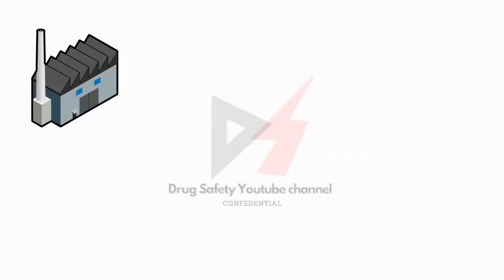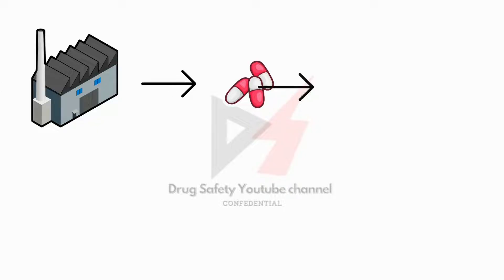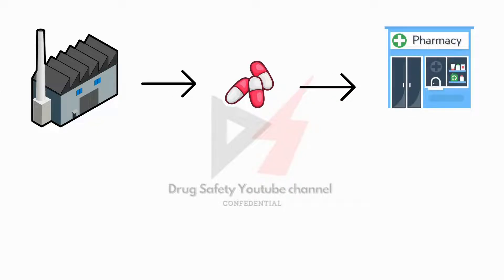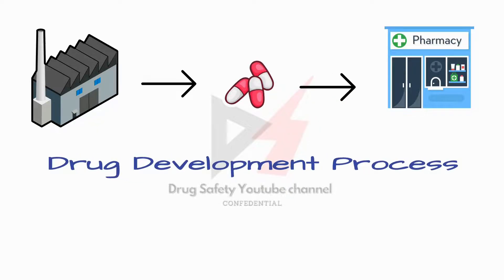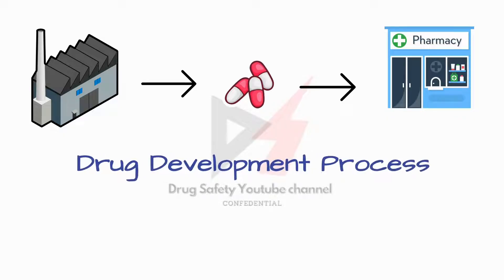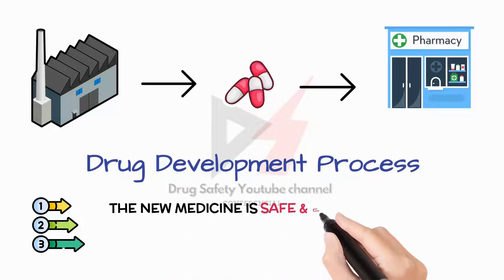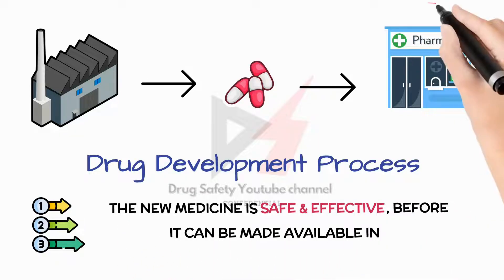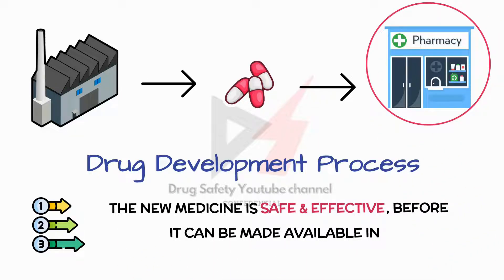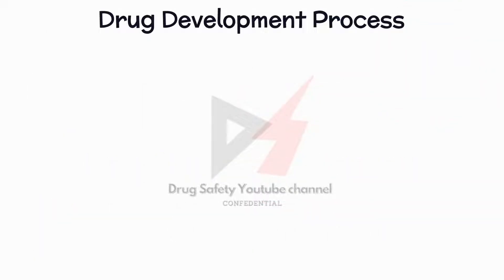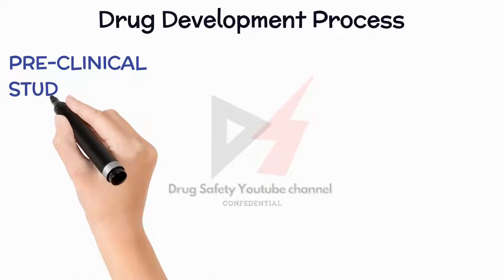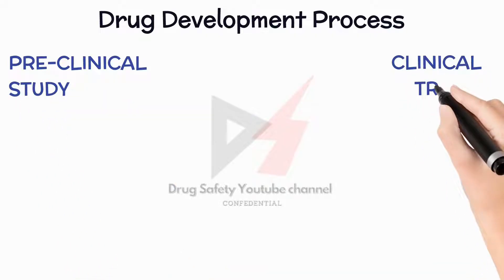Whenever a pharmaceutical company creates or formulates a new medicine with the intention of bringing it to market, it has to undergo a rigorous process known as the drug development process. This process includes several crucial steps to ensure the new medicine is safe and effective before it can be made available in pharmacies. The drug development process consists of two main parts: preclinical studies and clinical trials.